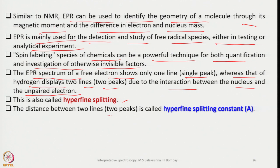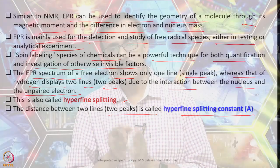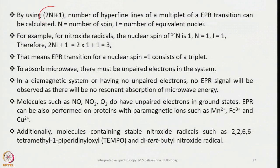The distance between two lines is called the hyperfine splitting constant A, analogous to the coupling constant in NMR spectroscopy. Using the simple 2NI + 1 rule, the number of hyperfine lines of an EPR transition can be calculated, where N is the number of equivalent nuclei and I is the nuclear spin. For example, for nitroxide radicals the nuclear spin of ¹⁴N is 1, so N=1 and I=1; therefore 2NI + 1 gives three lines, meaning the EPR transition consists of a triplet.